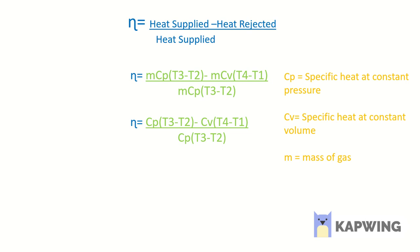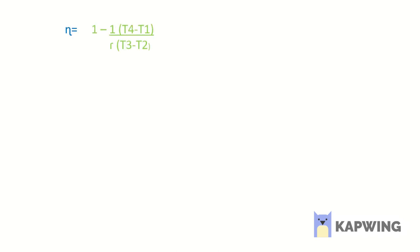Dividing the numerator by Cp·(T3 minus T2) gives us: 1 minus Cv·(T4 minus T1) divided by Cp·(T3 minus T2). There is a term called the ratio of specific heats, given by Cp divided by Cv, denoted as gamma. Substituting gamma into the expression gives: 1 minus (1/gamma)·(T4 minus T1)/(T3 minus T2).